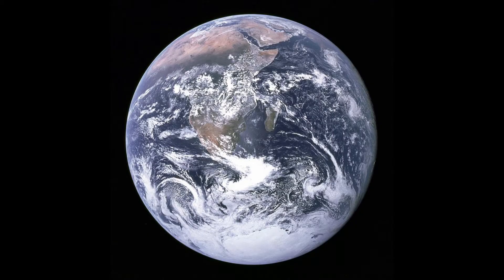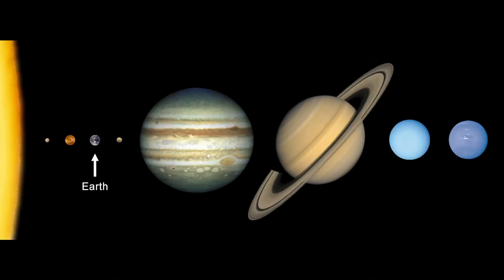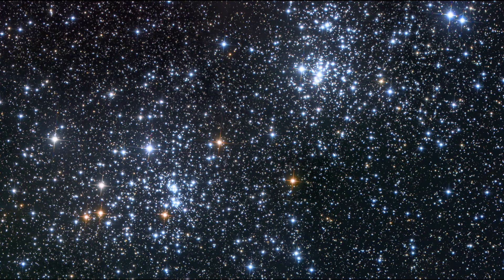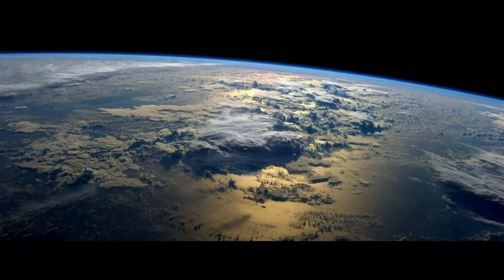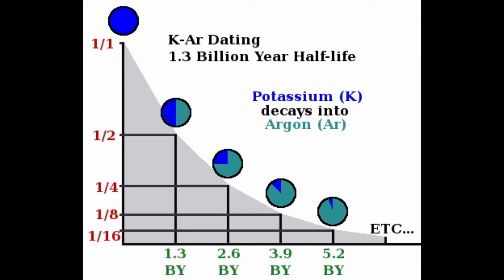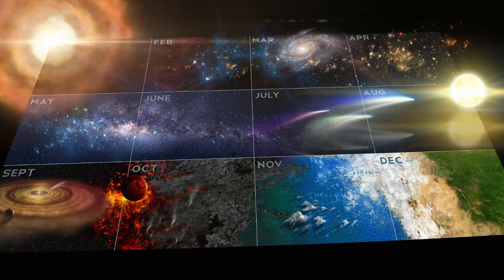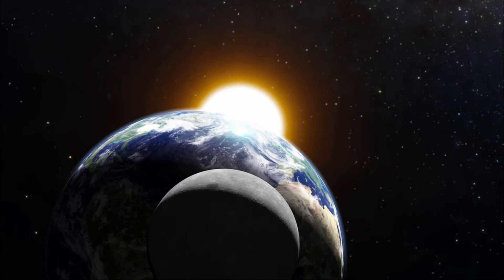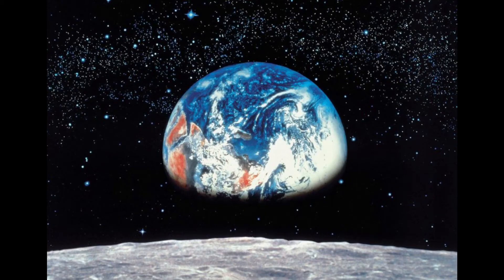Earth, otherwise known as the world or the globe, is the third planet from the sun and the only object in the universe known to harbor life. It is the densest planet in the solar system and the largest of the four terrestrial planets — the four being Venus, Mercury, Mars, and Earth. According to radiometric dating and other sources of evidence, Earth formed about 4.54 billion years ago. Earth's gravity interacts with other objects in space, especially the sun and the moon, Earth's only natural satellite.